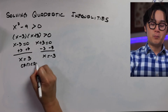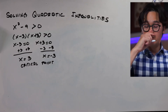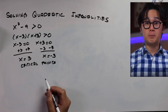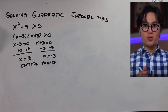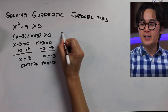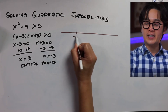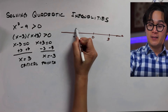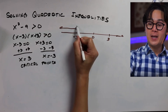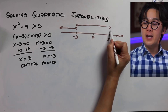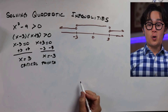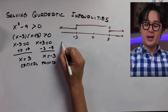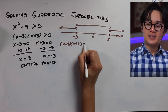The critical points tell us where to avoid so the expression doesn't equal 0. Using a sign chart, we test three intervals: anything to the left of negative 3, anything between negative 3 and 3, and anything to the right of positive 3. We'll use the factored form x minus 3 times x plus 3 and check if it is greater than 0.